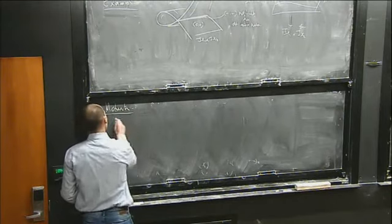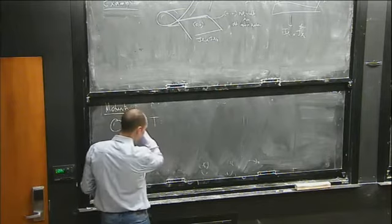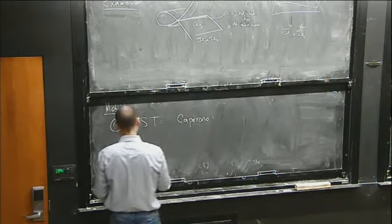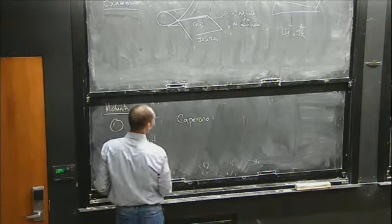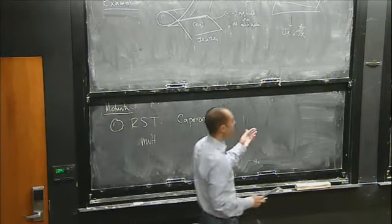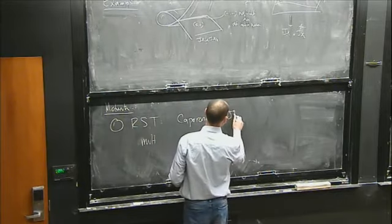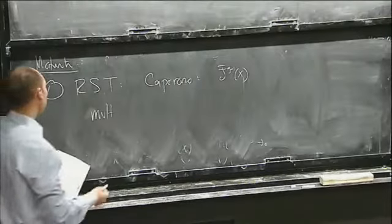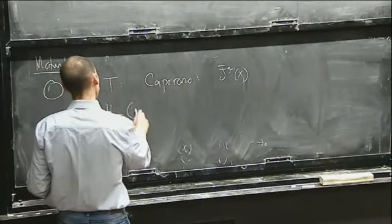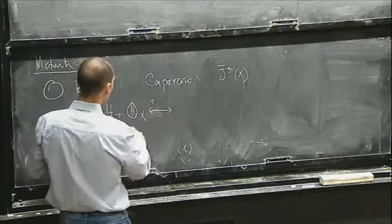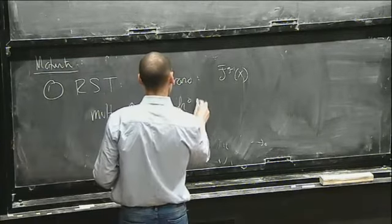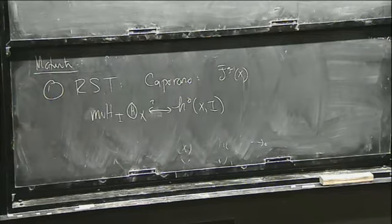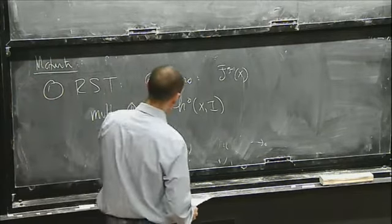A little more motivation. One thing I'd like to look at is the Riemann singularity theorem. Caporaso asked the following question: these compactified Jacobians in degree g minus 1 come with theta divisors defined in the same way. She asked: what is the relationship between the multiplicity of a point on the theta divisor and the space of global sections of the corresponding rank one torsion-free sheaf? This is a basic, naive question you would ask from the Riemann singularity theorem for smooth curves.